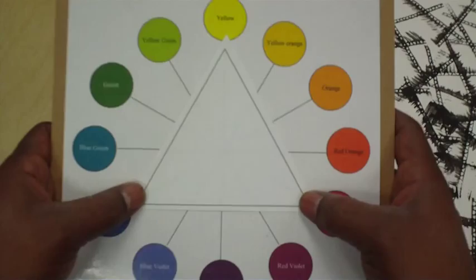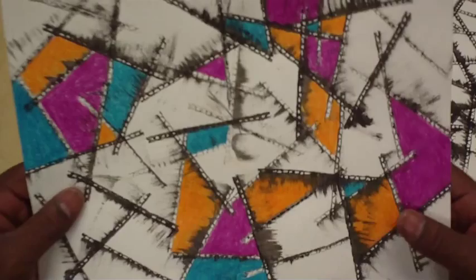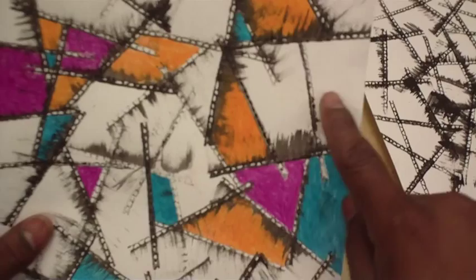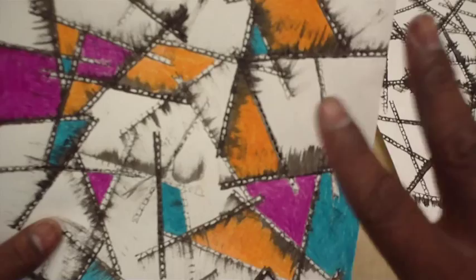That's rule number one. Now rule number two, I want you to look at what I did and this is really easy, but listen carefully: no two spaces that touch can be the same color. See these two spaces right here? They share a wall. These two spaces cannot be the same color.